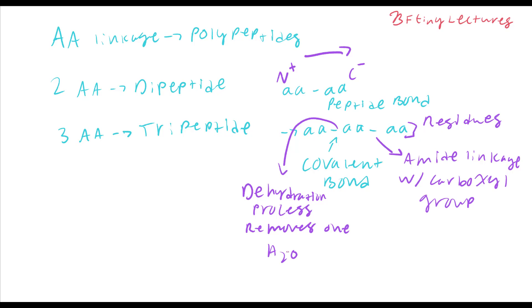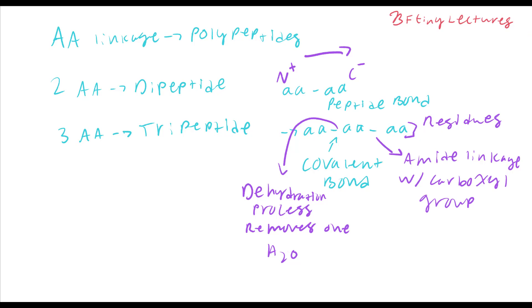We're going to work with alanine, one of the simplest amino acids, and link them together to make a dipeptide. Notice we have the carboxyl group that is already deprotonated — we're probably at a pH of about 2.2 for alanine. We have about two lone pairs that are going to combine with two hydrogens to make H2O, which is the dehydration process of the amide linkage.